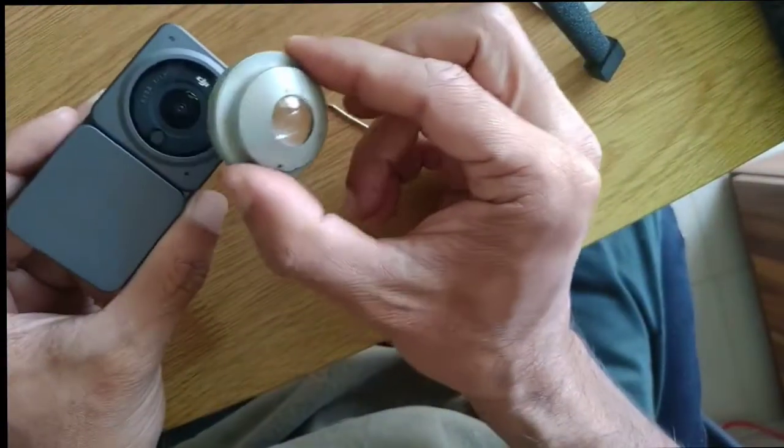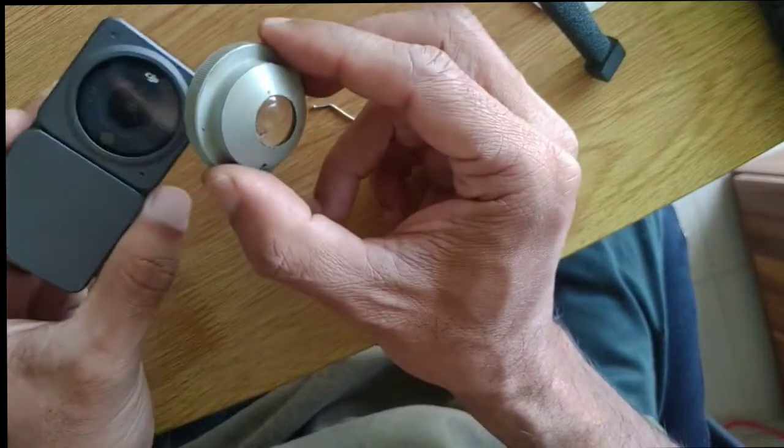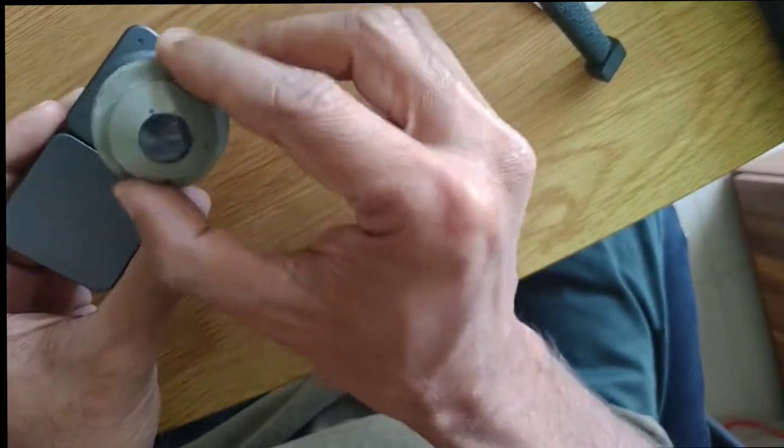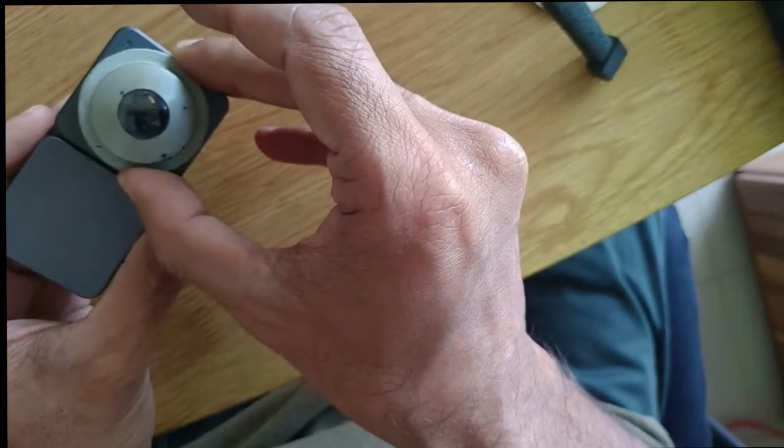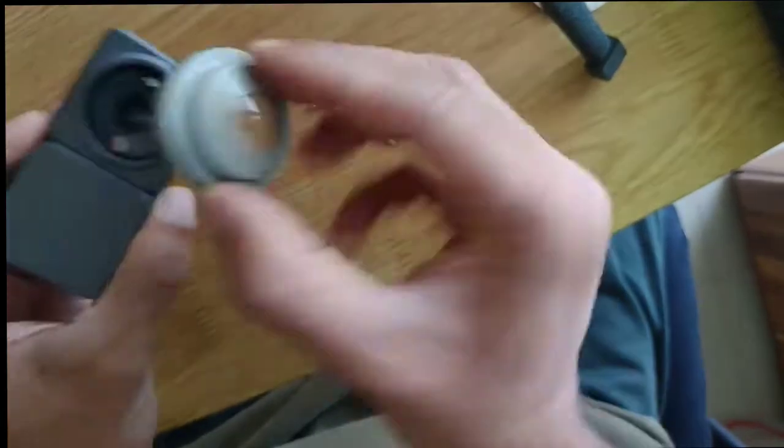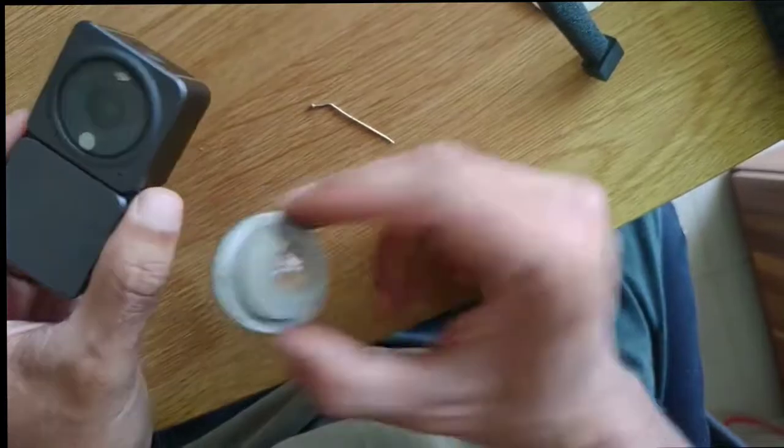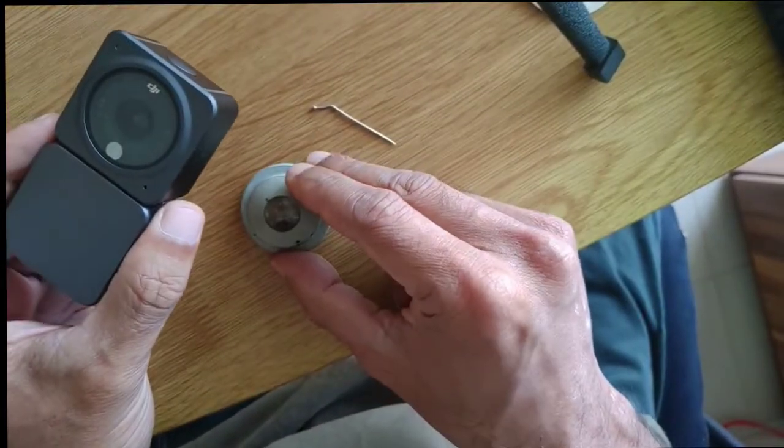So my best way of attaching it would be to find something that I can stick on here and attach the lens using the magnet, so that I can pop it on and off, just like the original macro lens.